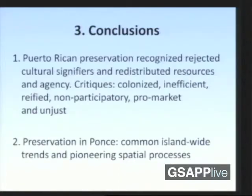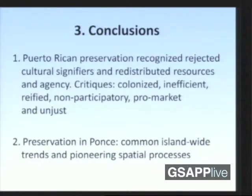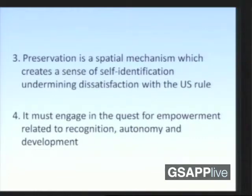From this holistic idea to conquer autonomy, preservation is one of the key emblems, and what this municipality did actually changed power relations on the island after the law. My conclusions: preservation has recognized rejected cultural signifiers and has redistributed resources — which Fraser and Honneth argue are two bases of social justice. So recognition and redistribution have taken place, but still in ways that are insufficient and open to arguable critiques, such as being inefficient, reified, and non-participatory. Preservation in Ponce follows island-wide trends but also creates pioneering special processes useful to study for second-tier cities in the global south. Preservation is a special mechanism that creates a sense of self-identification, undermining the satisfaction of the US rule. It must engage in the quest for empowerment related to recognition, autonomy, and development. Muchas gracias.